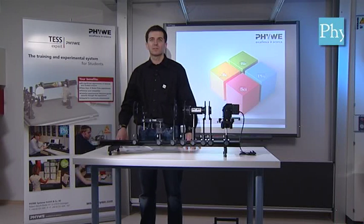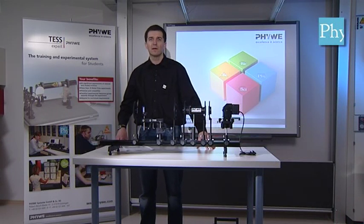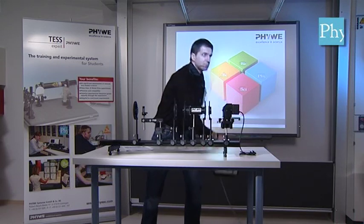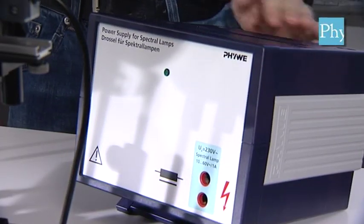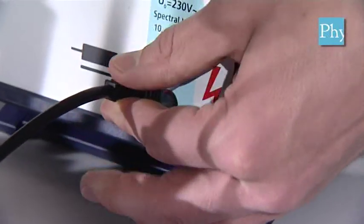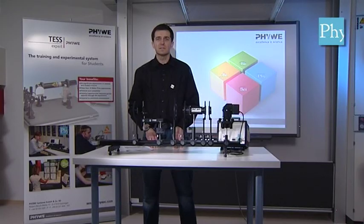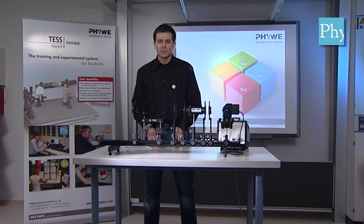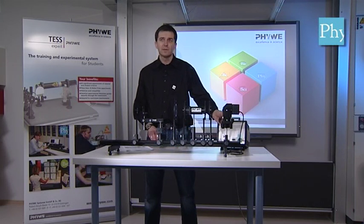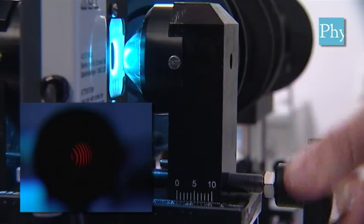Now that the basic setup is complete, we connect the spectral lamp to the power supply, switch it on, and we are ready to do some fine adjustments. Once adjusted, we can start with the measurements. These consist basically in changing the magnetic field applied to the spectral lamp by changing the distance of the pole pieces. We can either measure this magnetic field directly or use the curve given in the manual for the permanent magnet system.